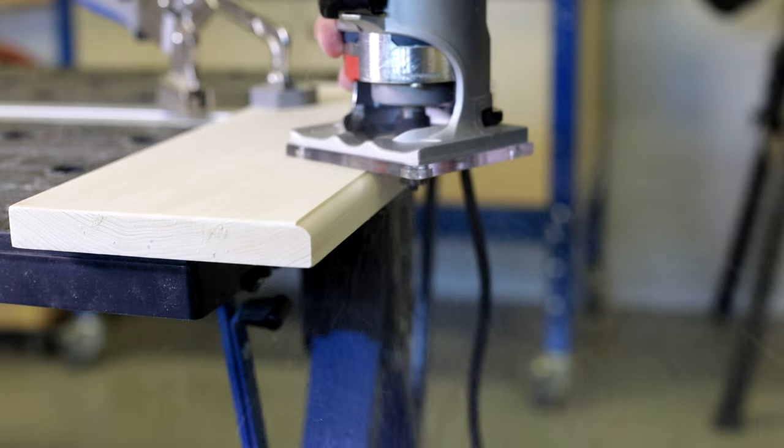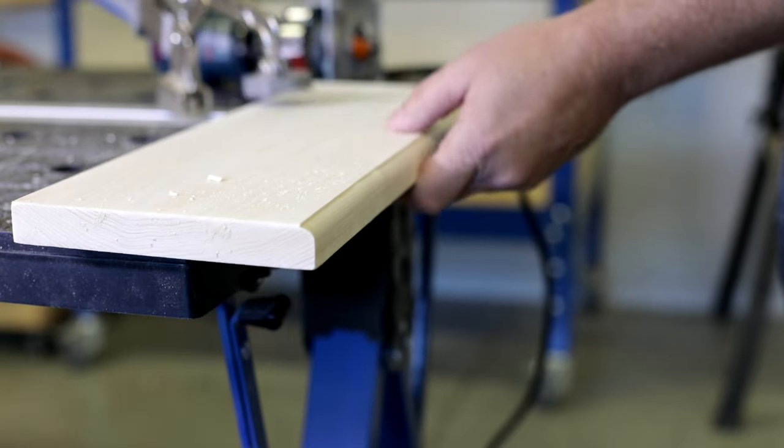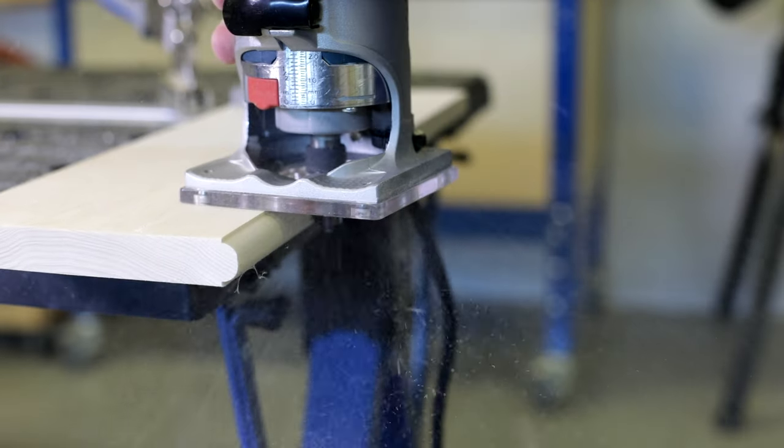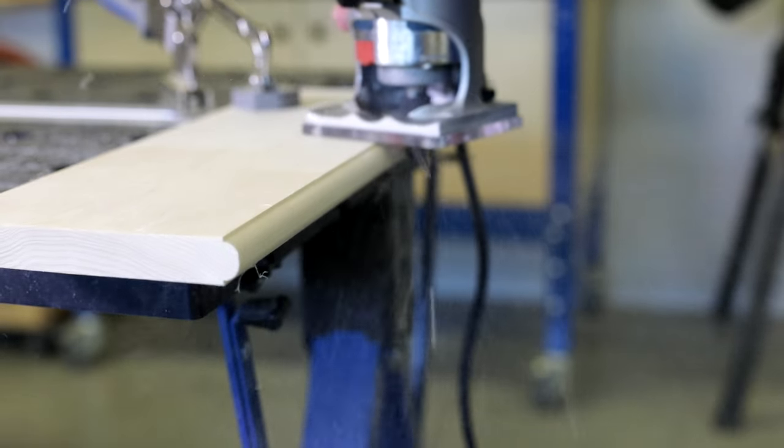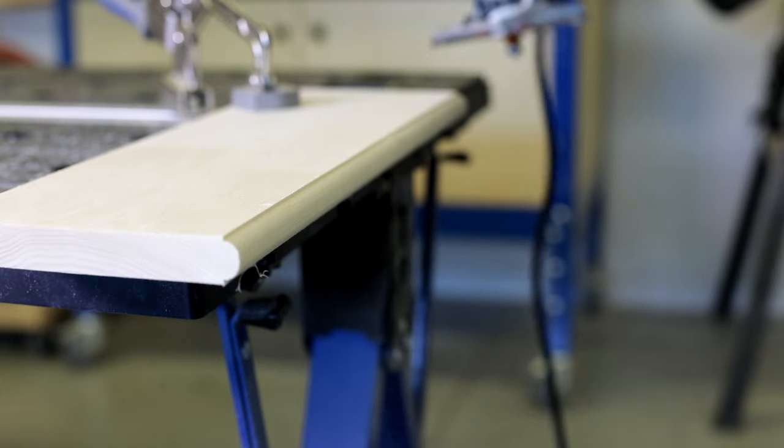Then route the edge the same way. To create a double bead, just flip the board once again and make a second pass. Just that easily you can add some pop to your projects with a decorative edge.